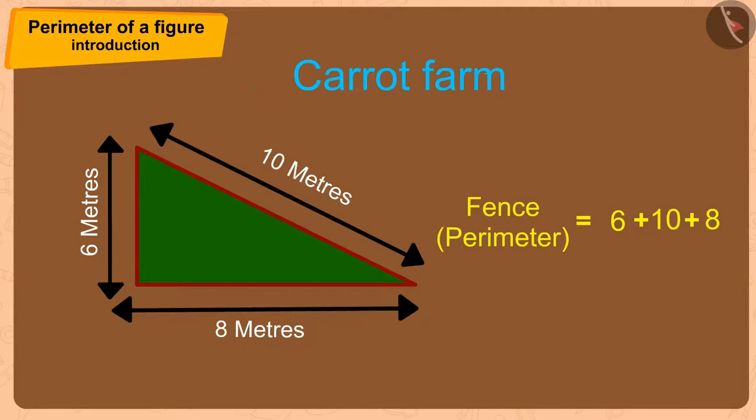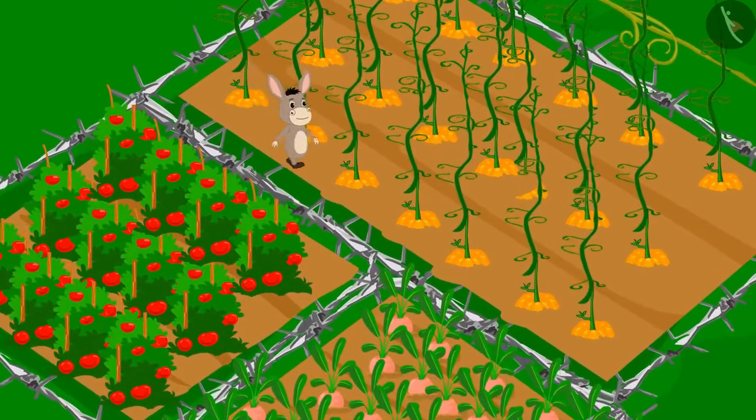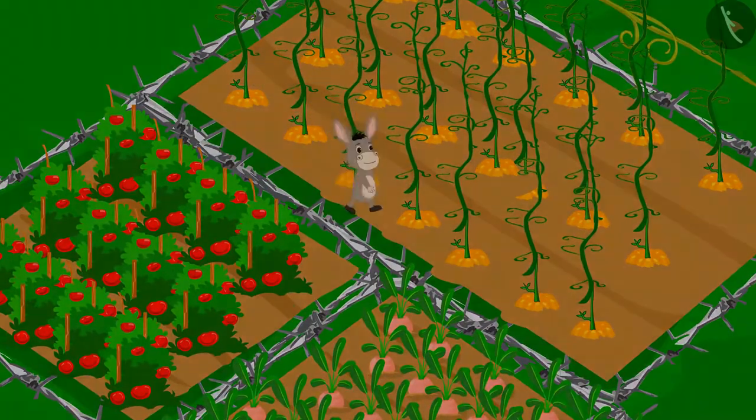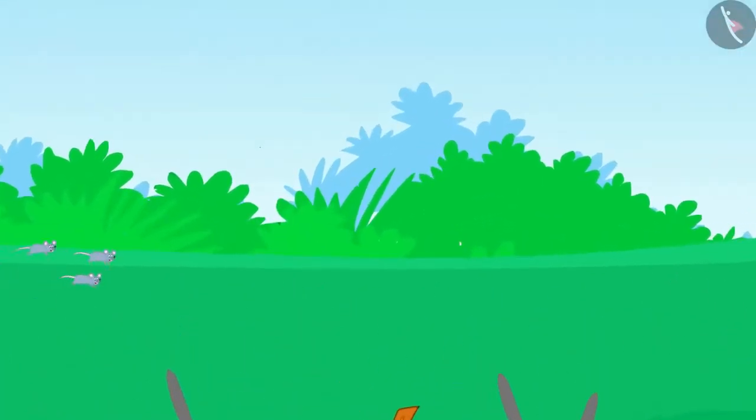Therefore, he needs a 24 meter long wire. Bhola finally put up a barbed wire fence around his farm and those mice never bothered Bhola again.